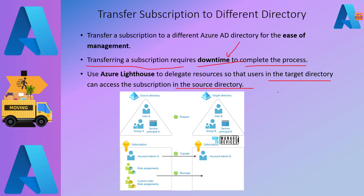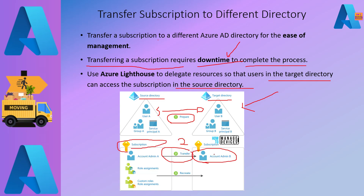Microsoft provides a schema showing the source directory and the target directory. You are moving the subscription from one directory to the other, and the process has three steps: first, prepare; second, transfer; and third, recreate — where you need to recreate resource assignments and custom role assignments after the transfer.